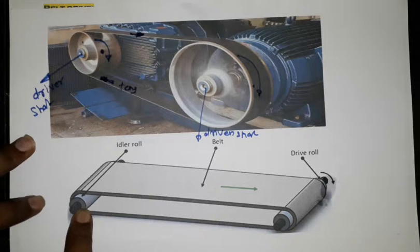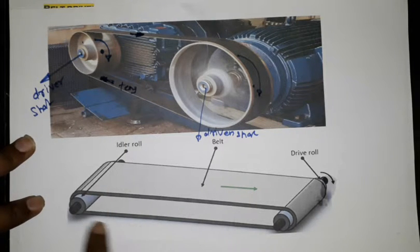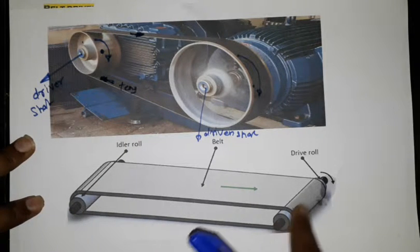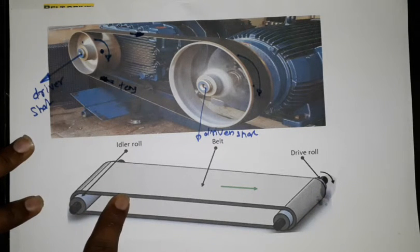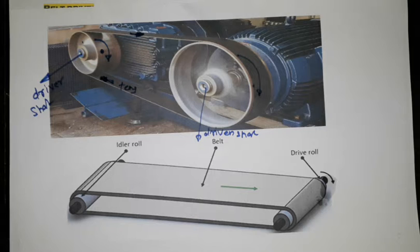This is another example of this. This is the belt, idler roller and drive roller. This is the power transmission. This is the belt drive. Thank you for watching my video.